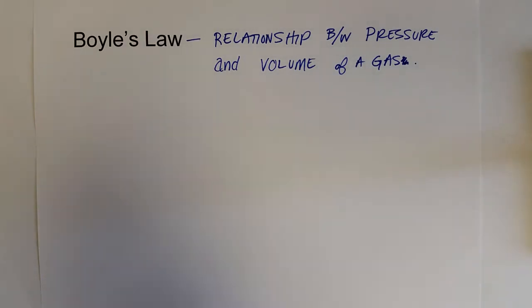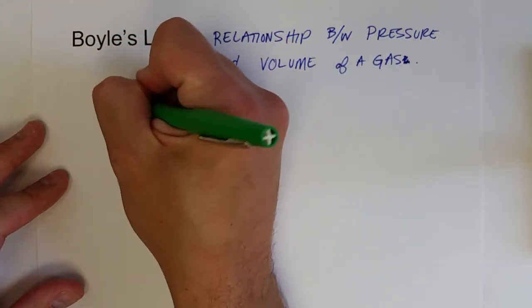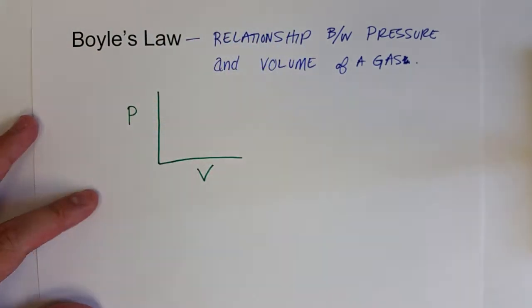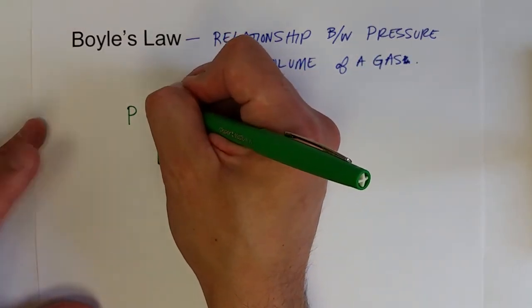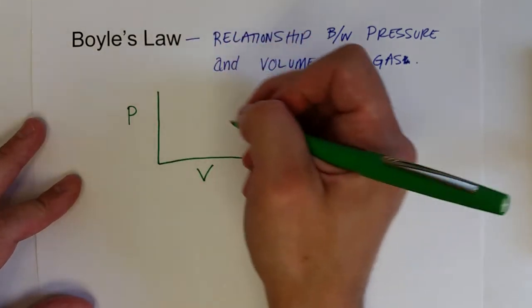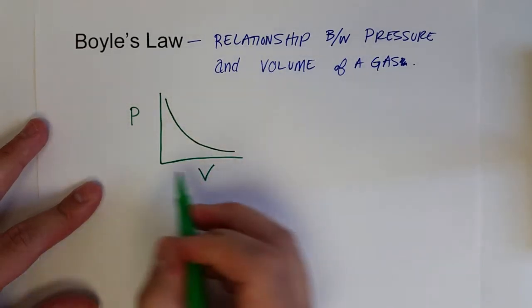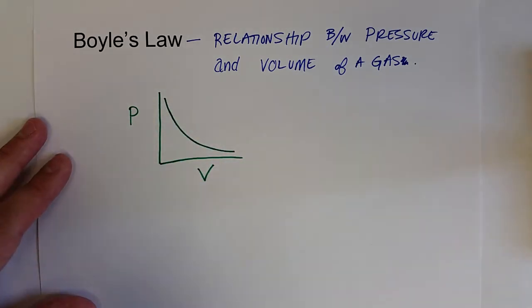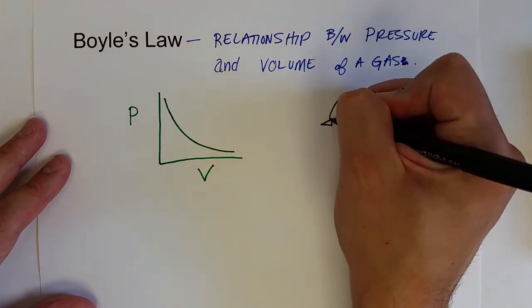This relationship can be best described when we look at a plot of these two features. If we plotted pressure as a function of volume for a gas, it turns out that as you increase the pressure, the volume decreases. At low pressures we've got high volumes, at high pressures we've got low volumes.